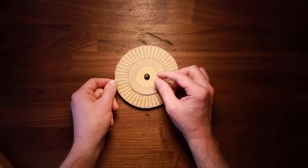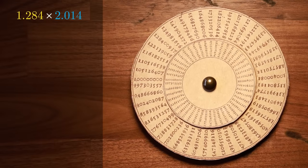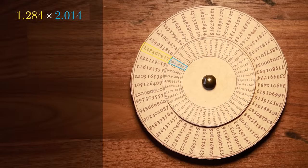While Berge's tables turn harder math problems into simpler ones, the slide rule gives us a way to solve problems without doing any math at all. To multiply 1.284 by 2.014, we find the closest value to 1.284 on our outer ring, and move the starting value of our inner ring here.